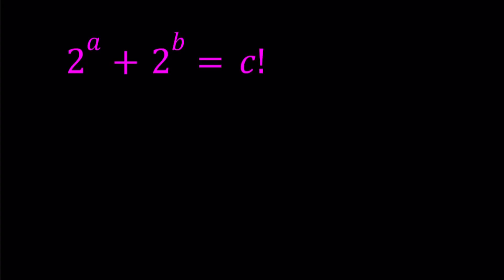Hello everyone. In this video, we're going to be solving an equation with factorials. We have 2 to the power a plus 2 to the power b equals c factorial, where a, b, c are non-negative integers, and we're looking for the values of a, b, and c.